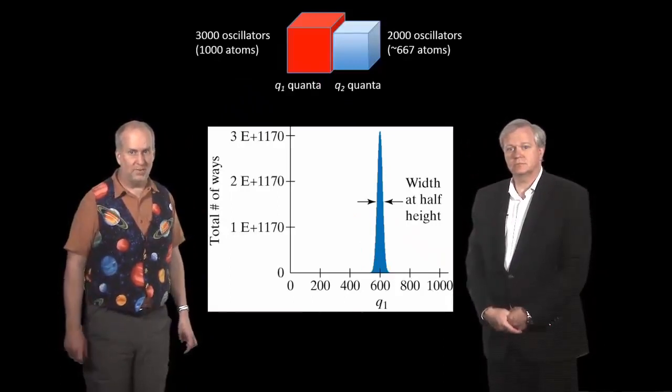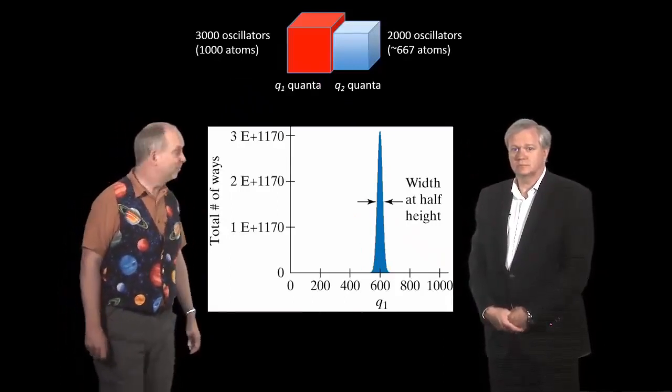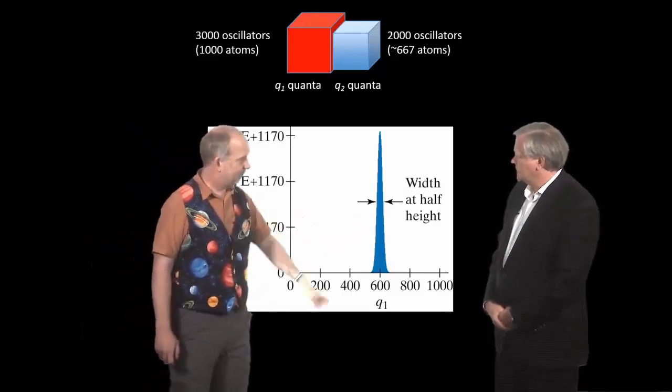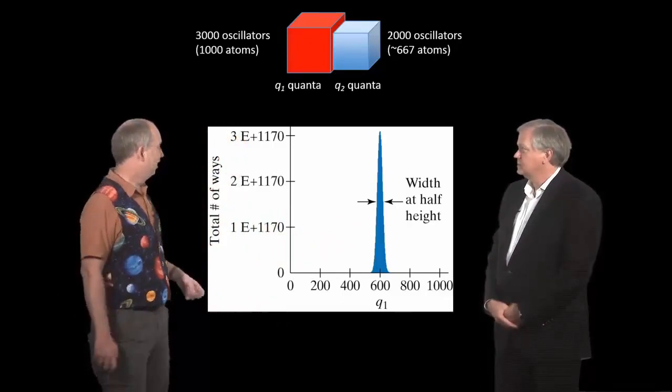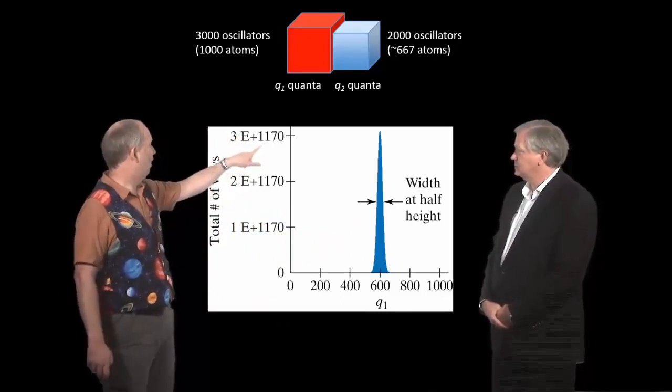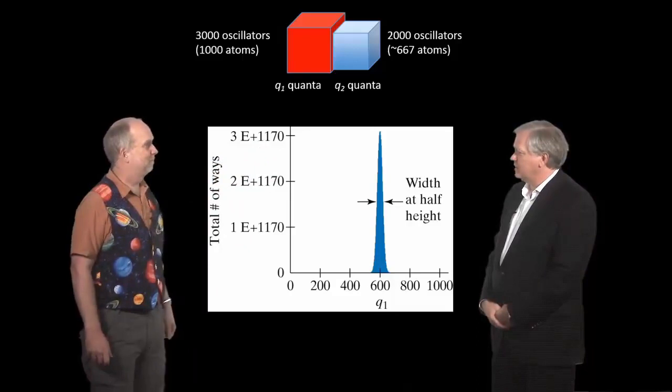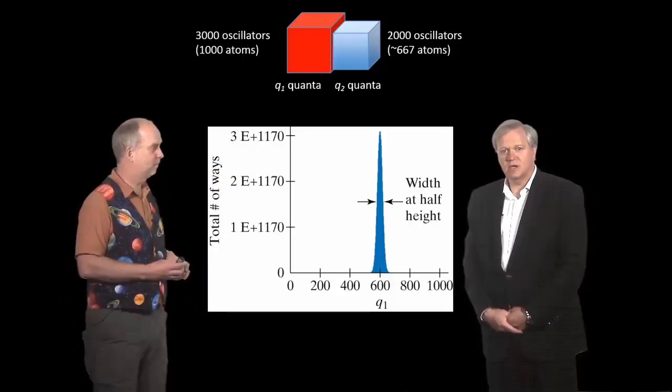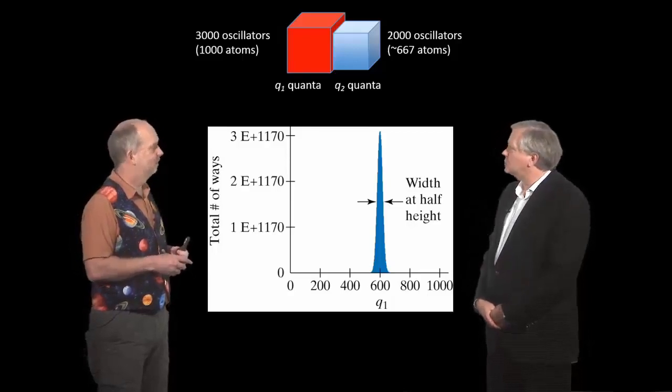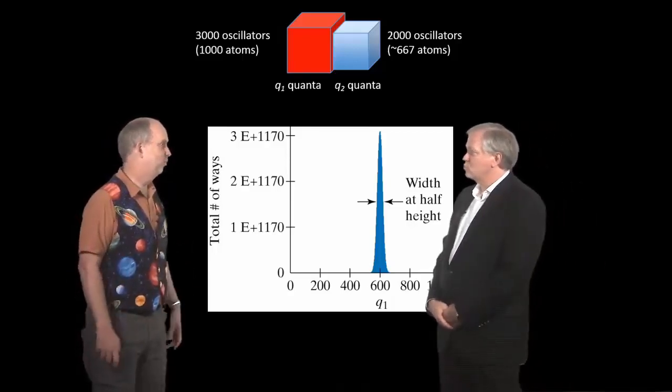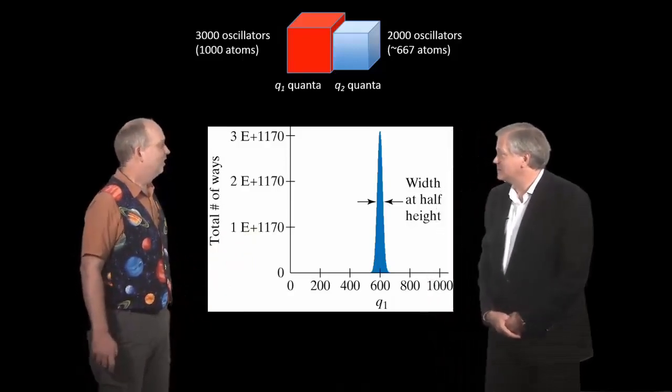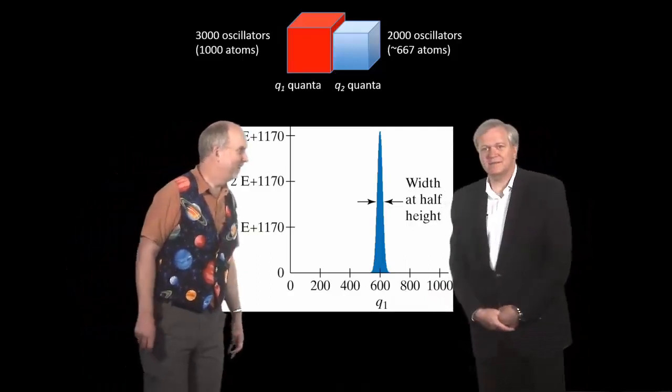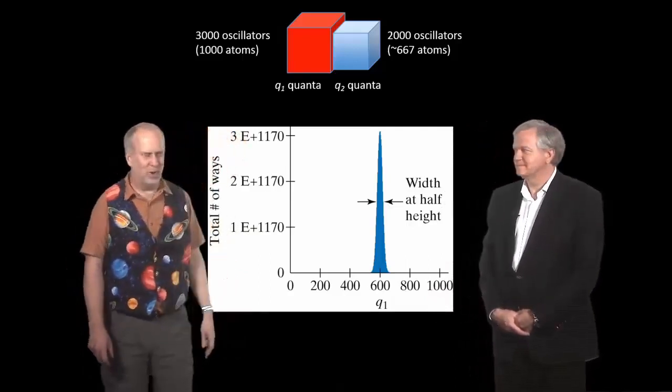But if you now go to 1,000 oscillators in each, then it's starting to get very narrow. And then 10,000, 100,000, and you're now up to 10 to the 1,170. So that's a very large number of ways, and you can imagine that 1,000 atoms is a tiny little block—any respectable block is going to have 10 to the 26 or something atoms. So you're talking about 10 to the 26 factorial, which I think even Wolfram Alpha would have trouble with. And I'm not sure how you can even write that down in a sensible notation.